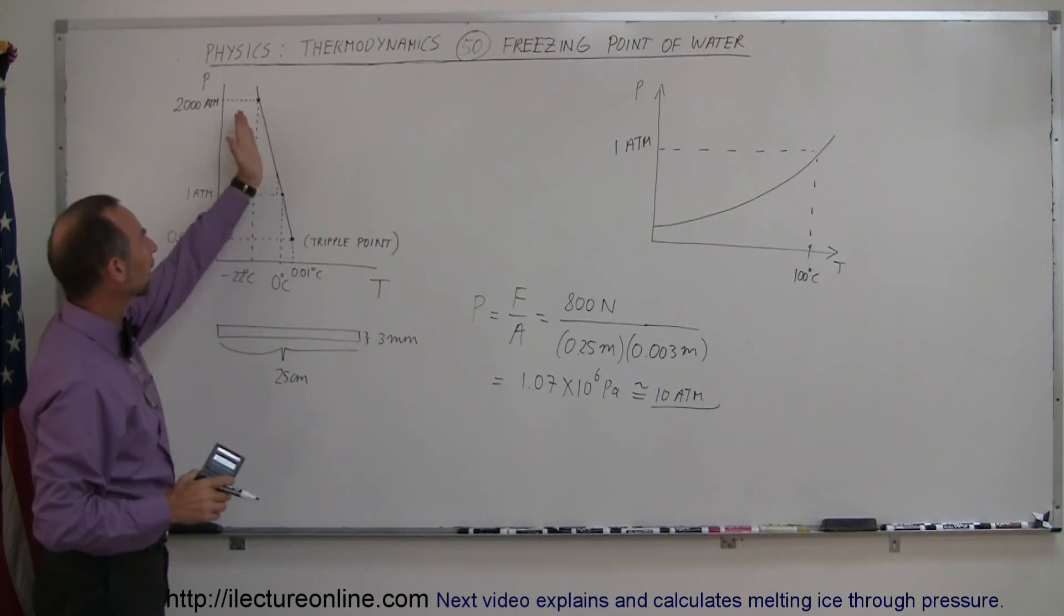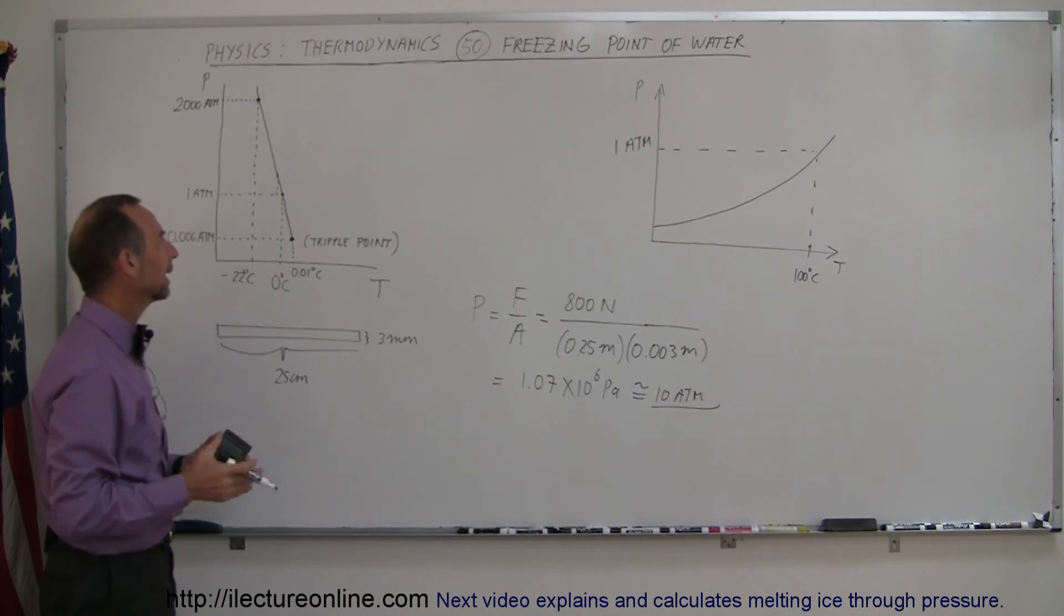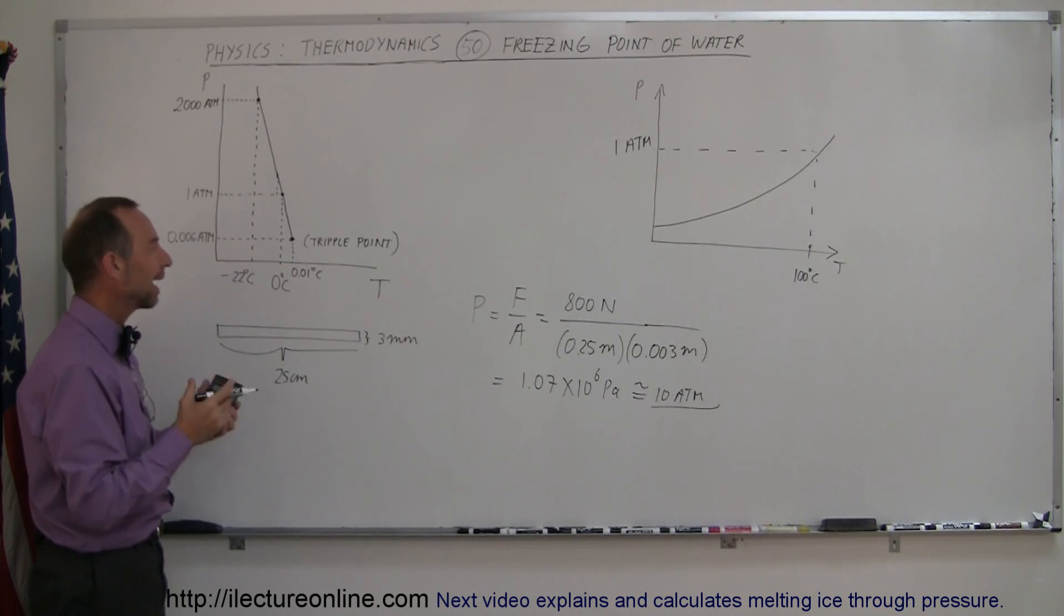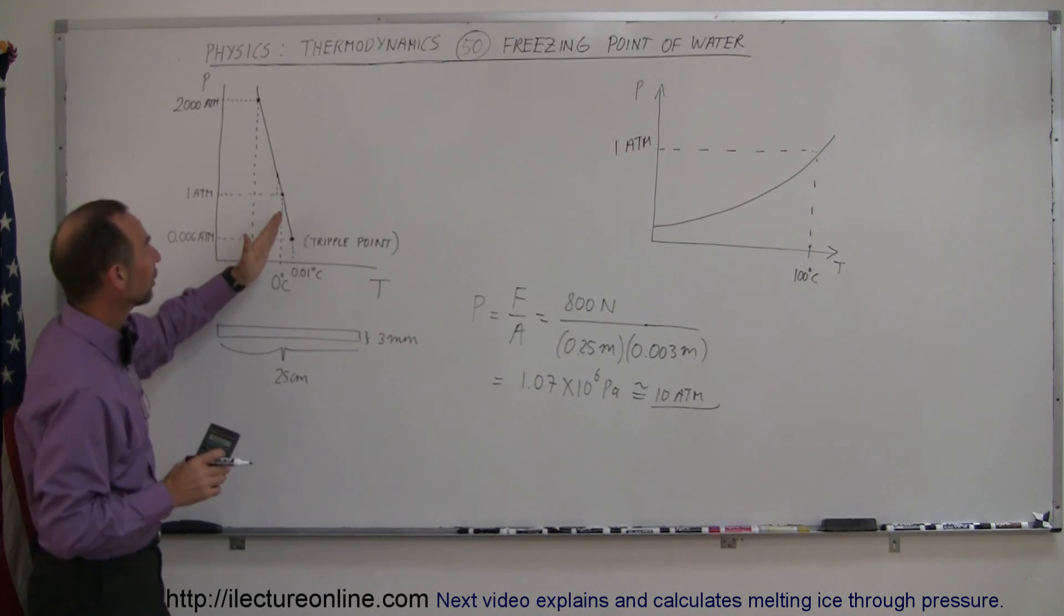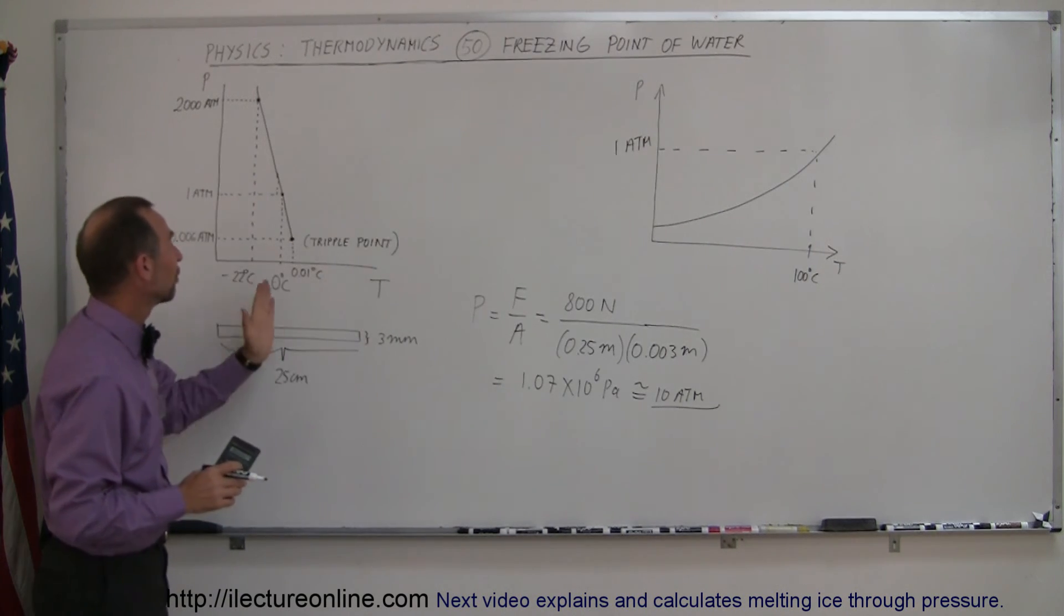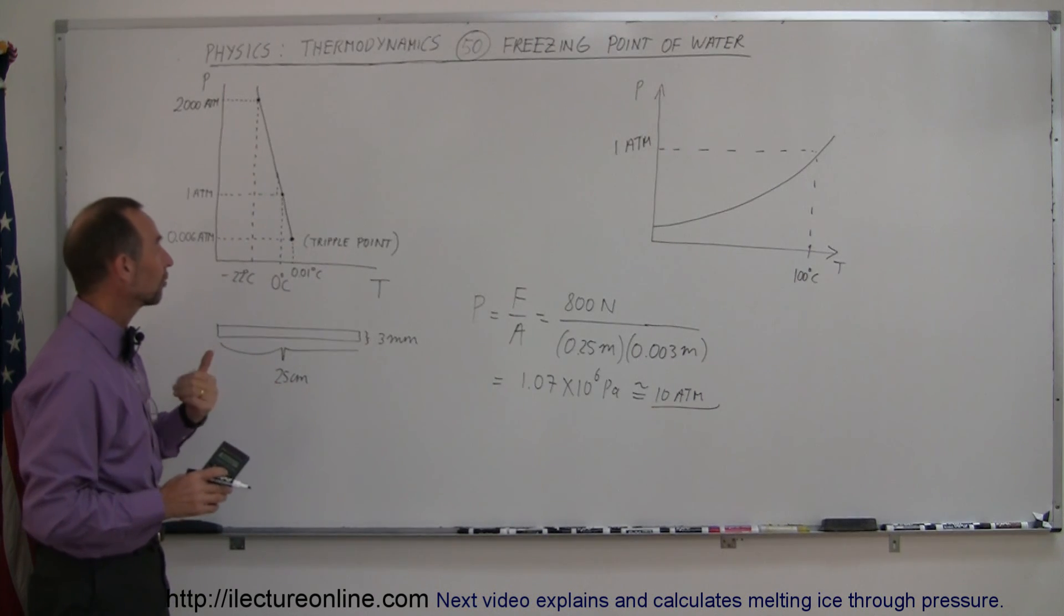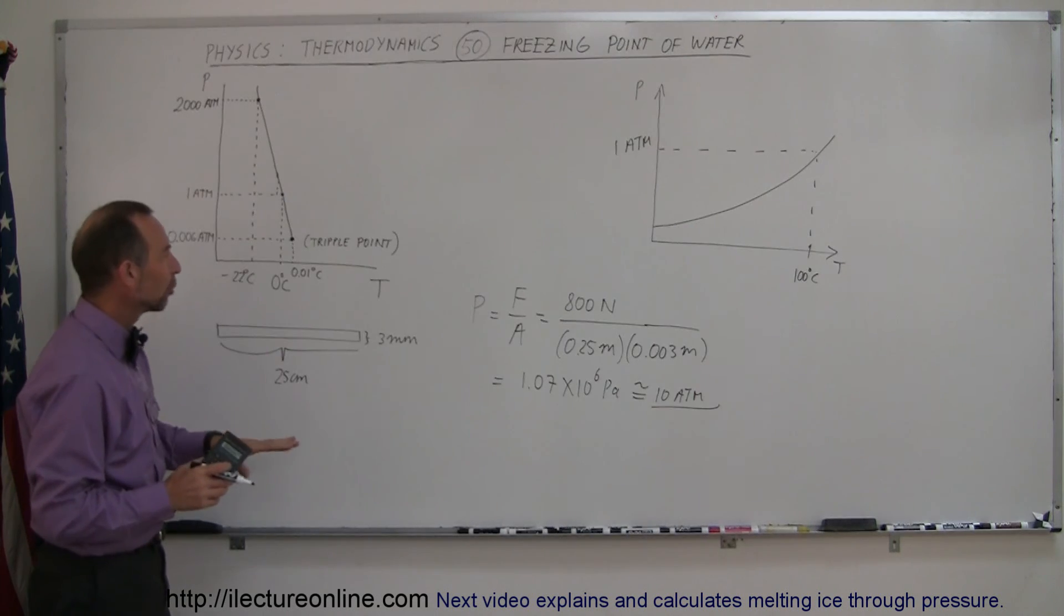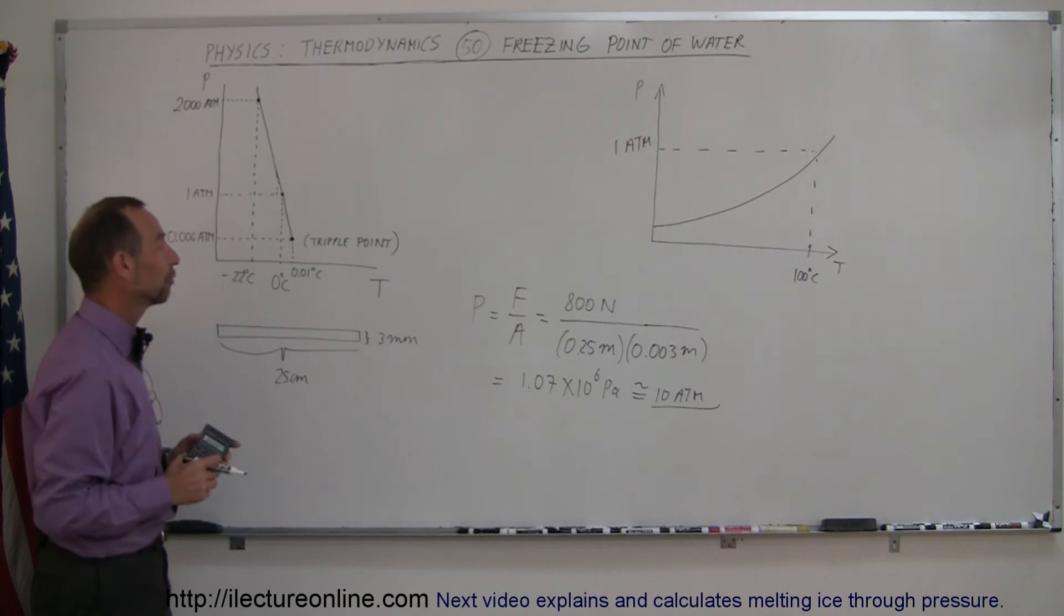Now also notice that this particular slope, it's actually a negative slope, is very peculiar to water and ice. The conversion from liquid to solid and ice has a very interesting relationship with pressure. Normally the curve looks like that for almost all other substances in the universe, but for water it's like this. Additional pressure will actually cause ice to melt, where in most cases when you add more pressure to the substance you can actually turn from a liquid into a solid, not so for ice.